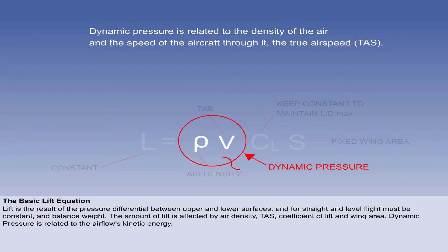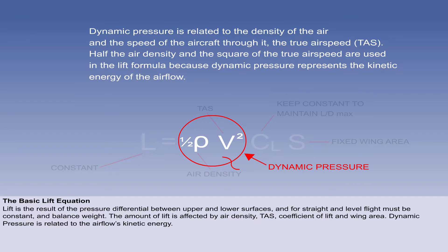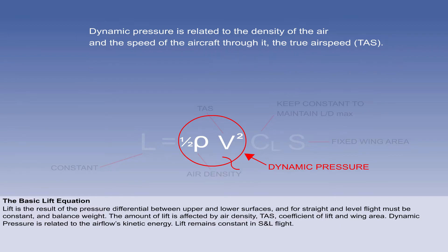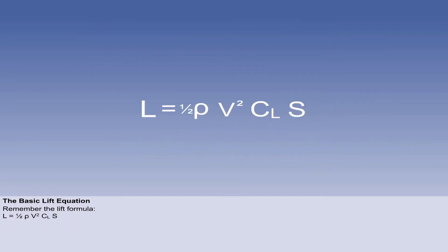Dynamic pressure depends on air density and TAS, and is related to the kinetic energy of the airflow. So the formula is based on half the density and the square of the TAS. Remember that for straight and level flight, lift must remain constant. It is important to remember this formula: L equals half rho V squared times CL times S.